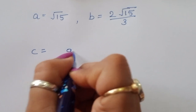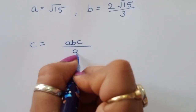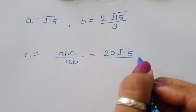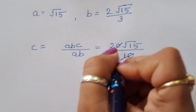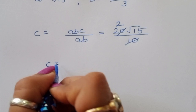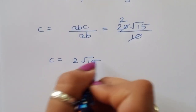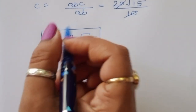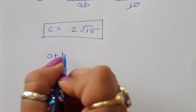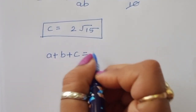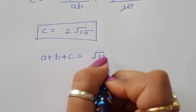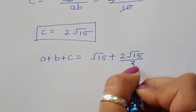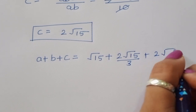Now we find the value of C. C equals ABC divided by AB, so that is 20 square root of 15 divided by 10, which gives us C equals 2 square root of 15. Now we have all three values and can find A plus B plus C: square root of 15 plus 2 square root of 15 divided by 3 plus 2 square root of 15.